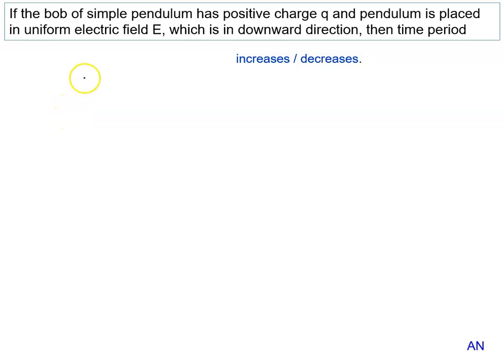If the bob of a simple pendulum has a positive charge Q, and the pendulum is placed in a uniform electric field which is in the downward direction, then will the time period increase or decrease?